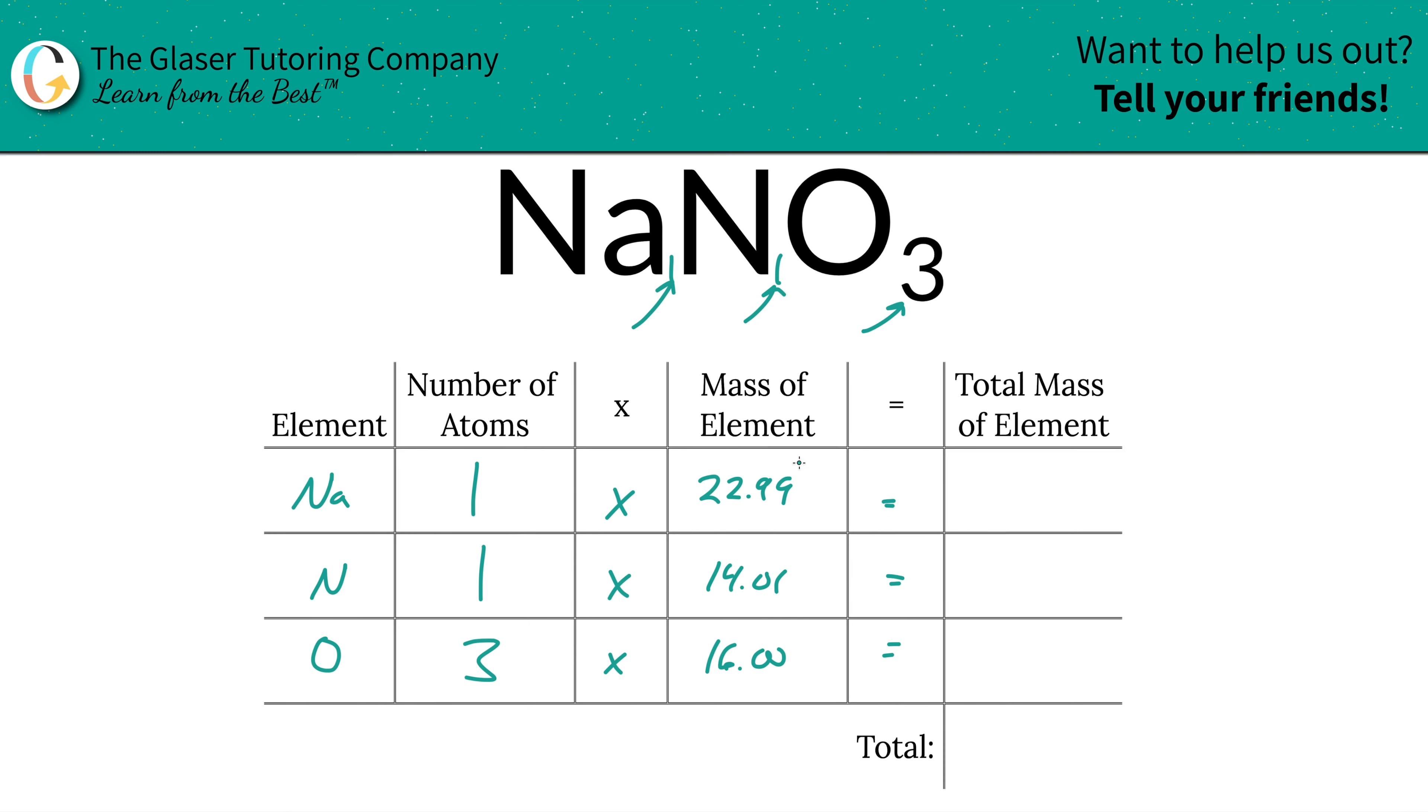Then we're simply going to multiply the row across to find the total mass of the element. The total mass of sodium in the compound is 22.99, total mass of nitrogen is 14.01, and the total mass of oxygen is 48.00. To find the total mass of the entire compound, just add this column up, and the total mass works out to be 85.00.